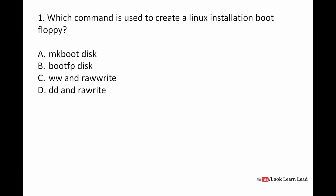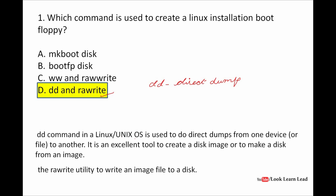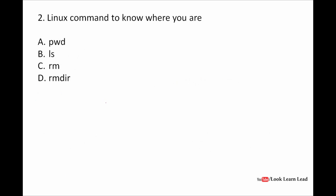Our first question is: which command is used to create a Linux installation boot floppy? The answer is D — dd and rawwrite. The dd command in Linux and Unix is used to do direct dumps from one device to another. It is an excellent tool to create a disk image or to make a disk from an image. The rawwrite command has the same method — it writes an image file to a disk.